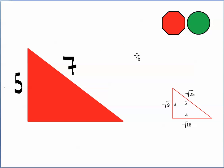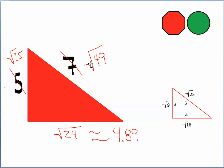Here we know the length of the hypotenuse and the length of one of the legs; find the other leg. I can rewrite 7 as the square root of 49, and I can rewrite 5 as the square root of 25. The number 49 minus the number 25 gives me 24. Put 24 under a square root sign — that's the perfect length of this leg. However, I can't easily use the square root of 24 directly, so I convert it to a decimal: the square root of 24 correct to two decimal places is 4.89.